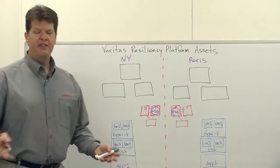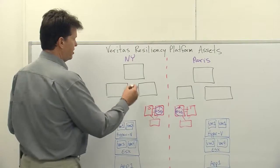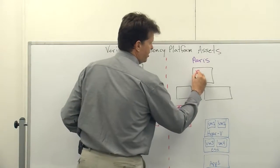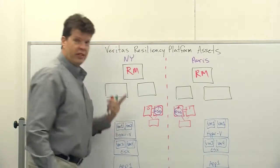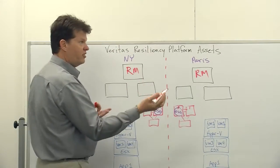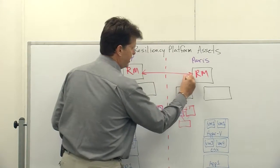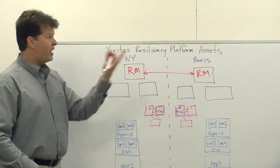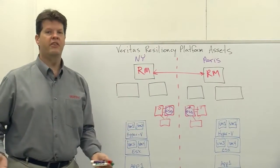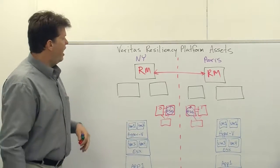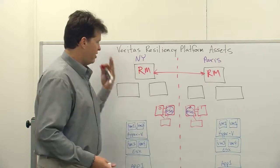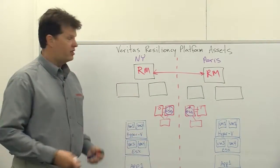A standard VRP configuration would consist of one resiliency manager - I'm just going to denote that with RM here. Resiliency manager at both sites, actually, and it contains a Cassandra database that is replicated between sites. So it really doesn't matter which resiliency manager you connect to via a browser to perform your configurations or migrations because the information can be obtained from either side and any configurations can go in both sides.